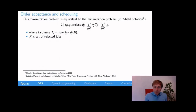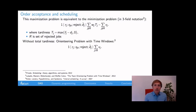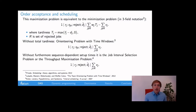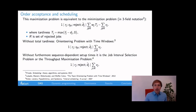I present this notation because it makes it easier to relate to restricted versions of this problem. For example, without total tardiness, this is equivalent to the orienteering problem with time windows, which again, without rejection, would be equivalent to the traveling salesman problem. Without the sequence-dependent setup times, this is equivalent to the job interval selection problem, also known as the throughput maximization problem. All these problems are NP-hard.